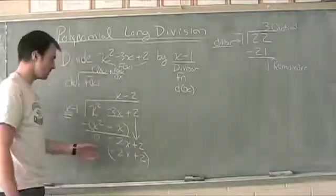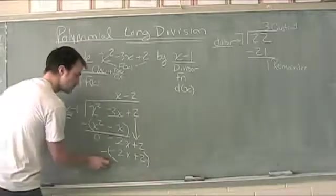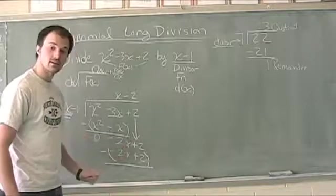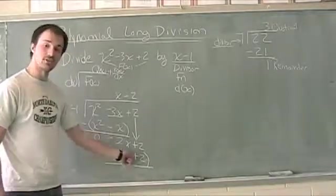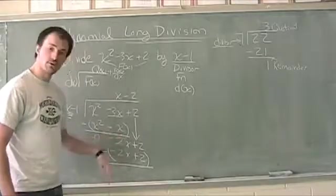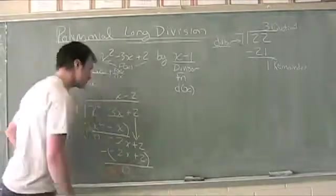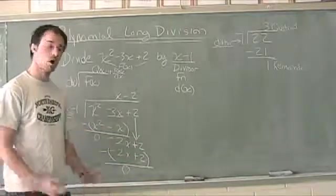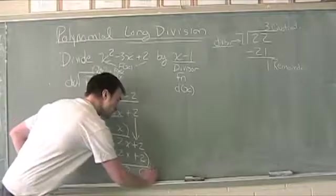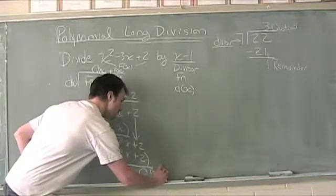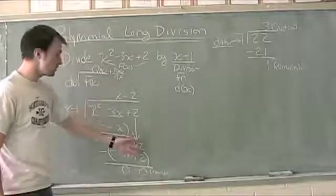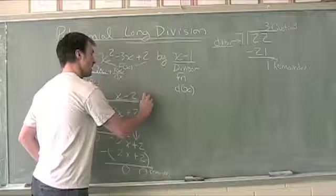We're subtracting that quantity from what we have above it, so we've got negative 2x minus negative 2x, or plus 2x. Negative 2x plus 2x gives me 0, and 2 minus 2 is also 0. We have no more terms, so 0 is actually our remainder and we're finished. X minus 2 is the quotient function, or q of x.